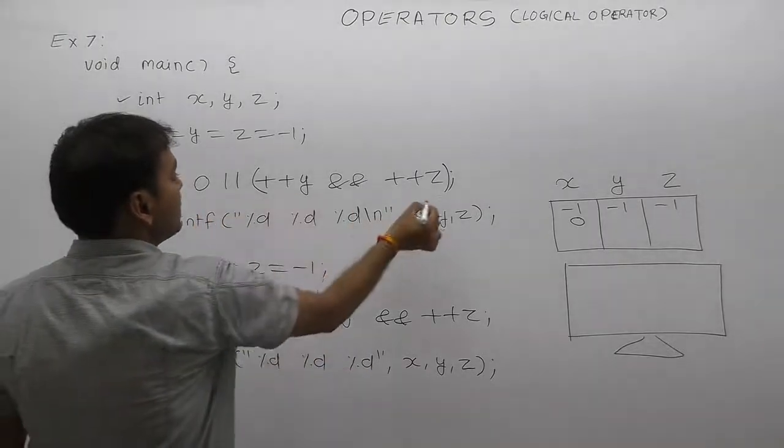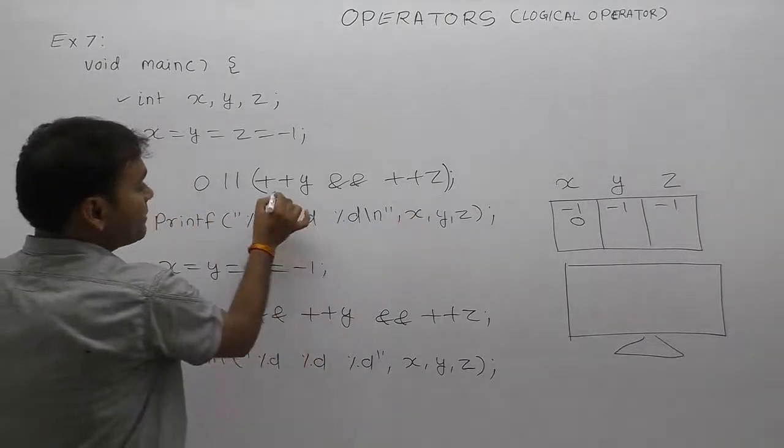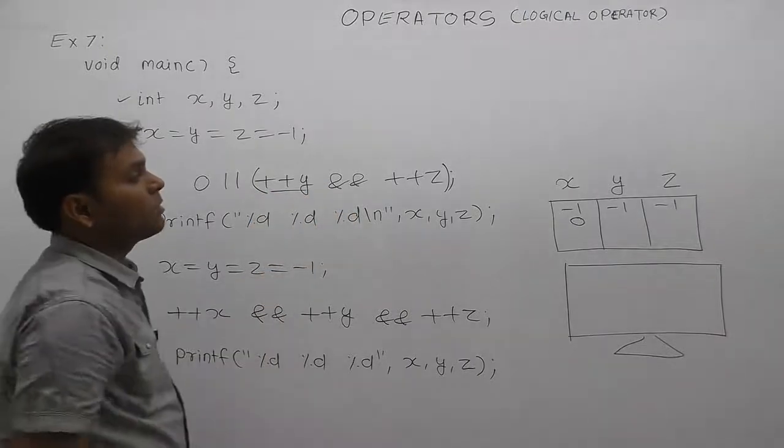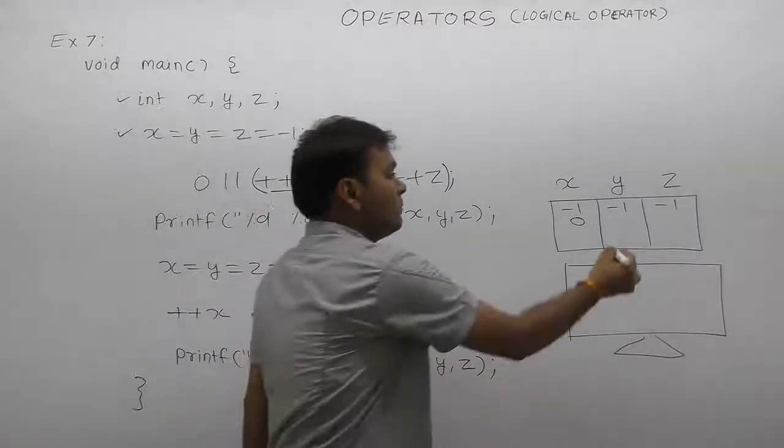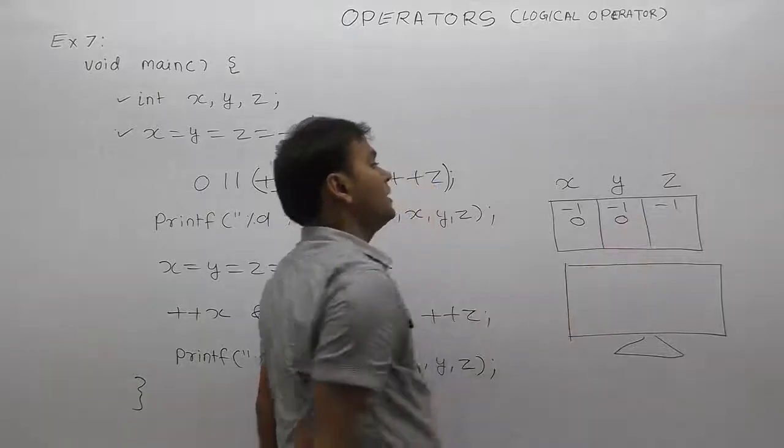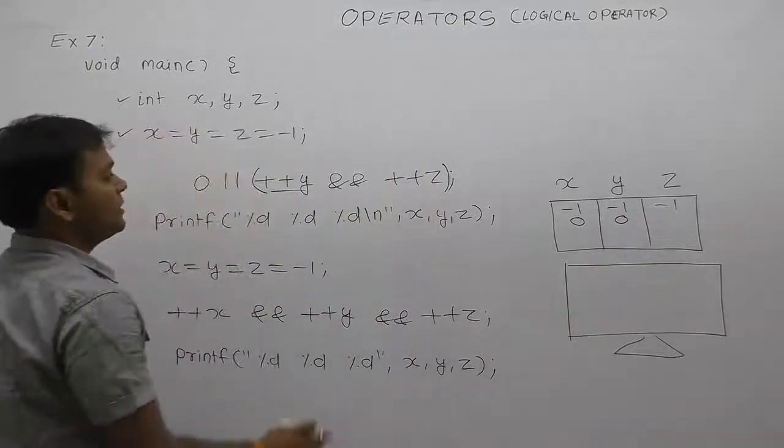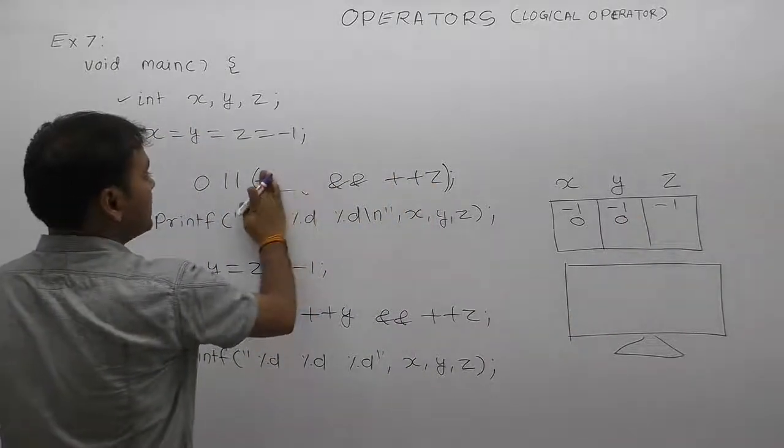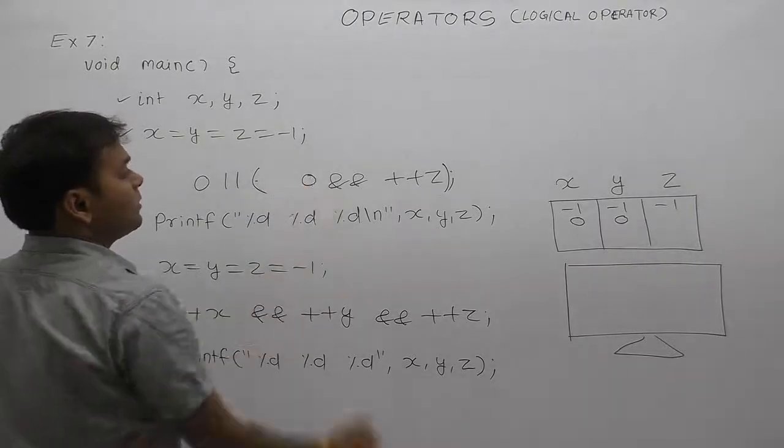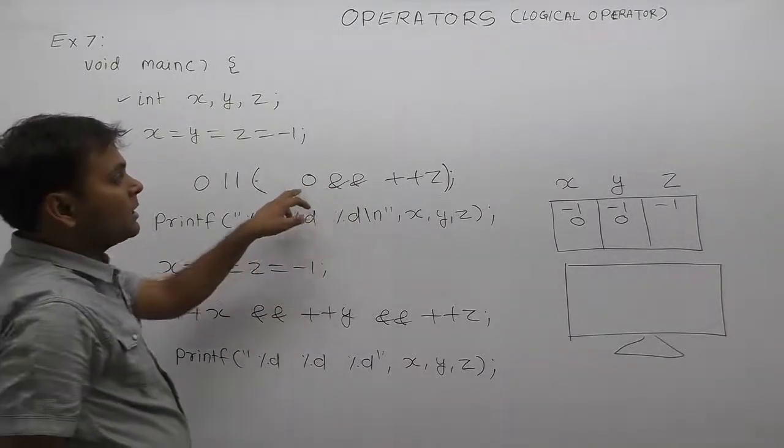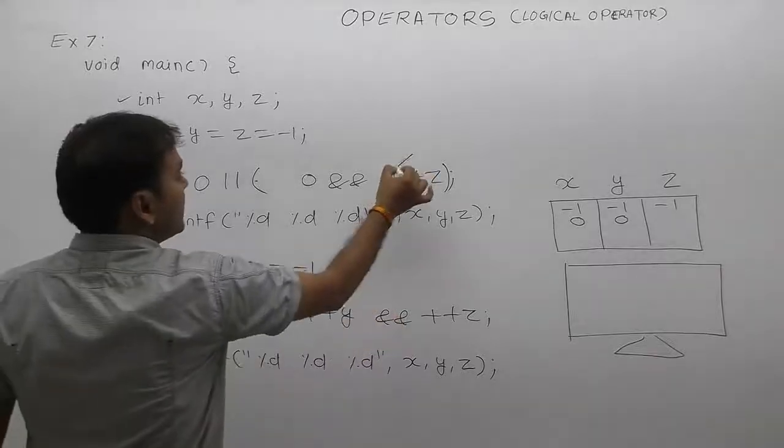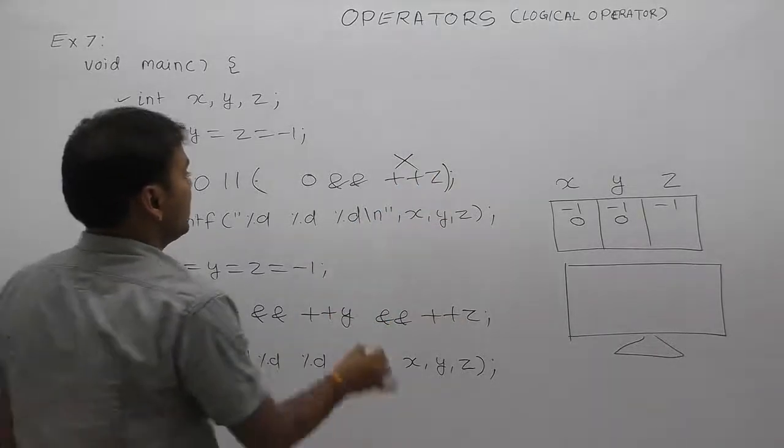Test the second condition. First of all, plus plus y. Increment in y, therefore y also got incremented by one, therefore it becomes 0. Now plus plus y is replaced by current value of y, which is 0. And in this case, this condition is also false.